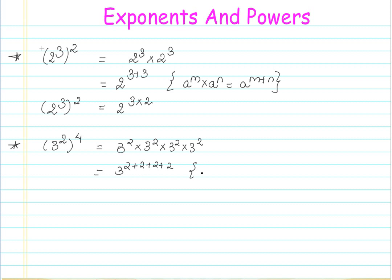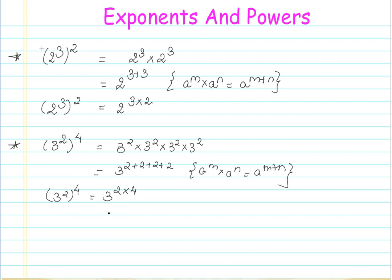This can be written as 3 to the power of 2 + 2 + 2 + 2, using the rule a^m × a^n = a^(m+n). This further gives us 3 to the power of 2 × 4. So if I have 3 to the power of 2, raised to the power of 4, I can write it as 3 to the power of 2 × 4. Generalizing: a to the power of m, raised to n, equals a to the power of m × n.